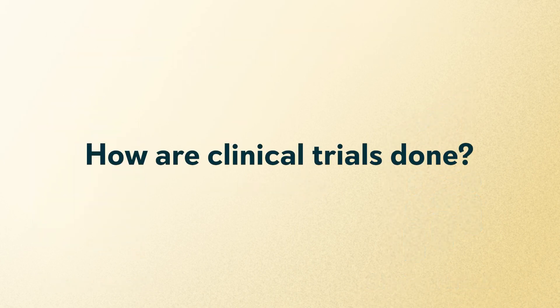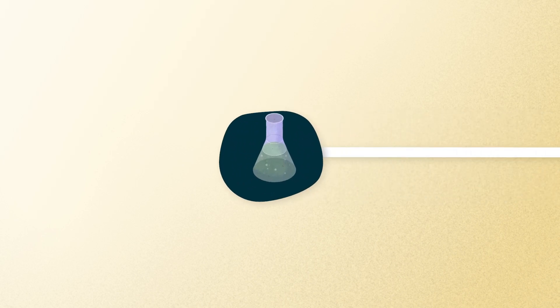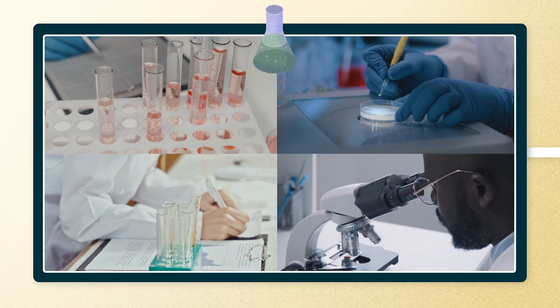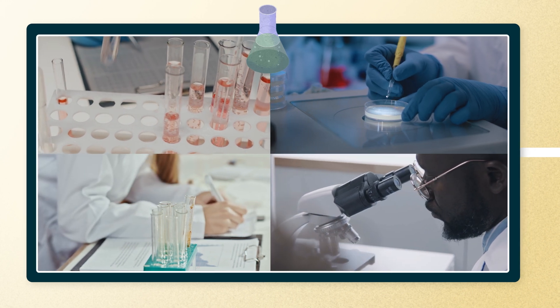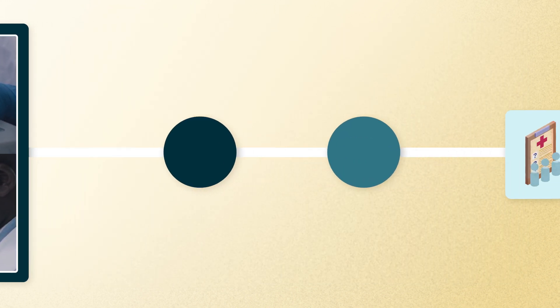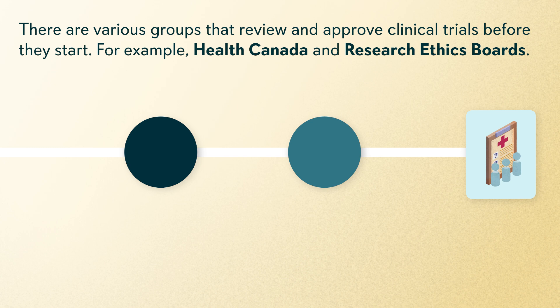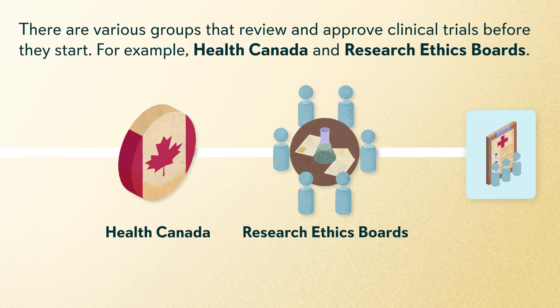How are clinical trials done? Clinical trials are usually the last step in a long process. This process begins with many years of research in a lab. If the results from this research show promise, researchers may then start to develop a clinical trial. There are various groups that review and approve clinical trials before they start — for example, Health Canada and Research Ethics Boards.